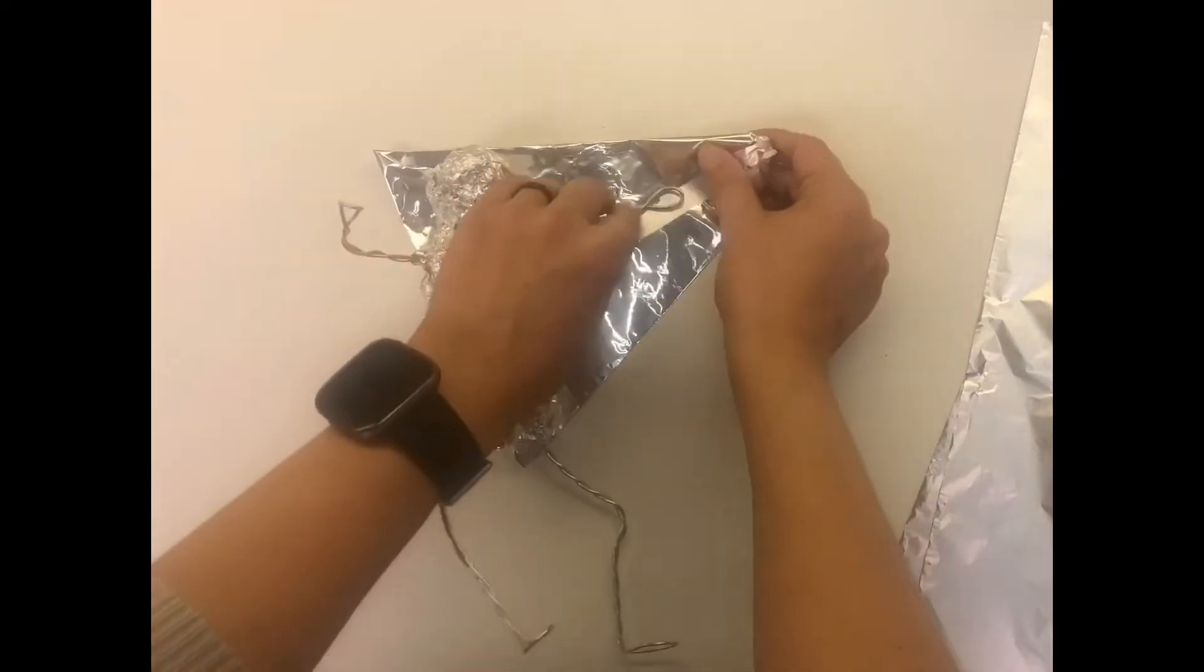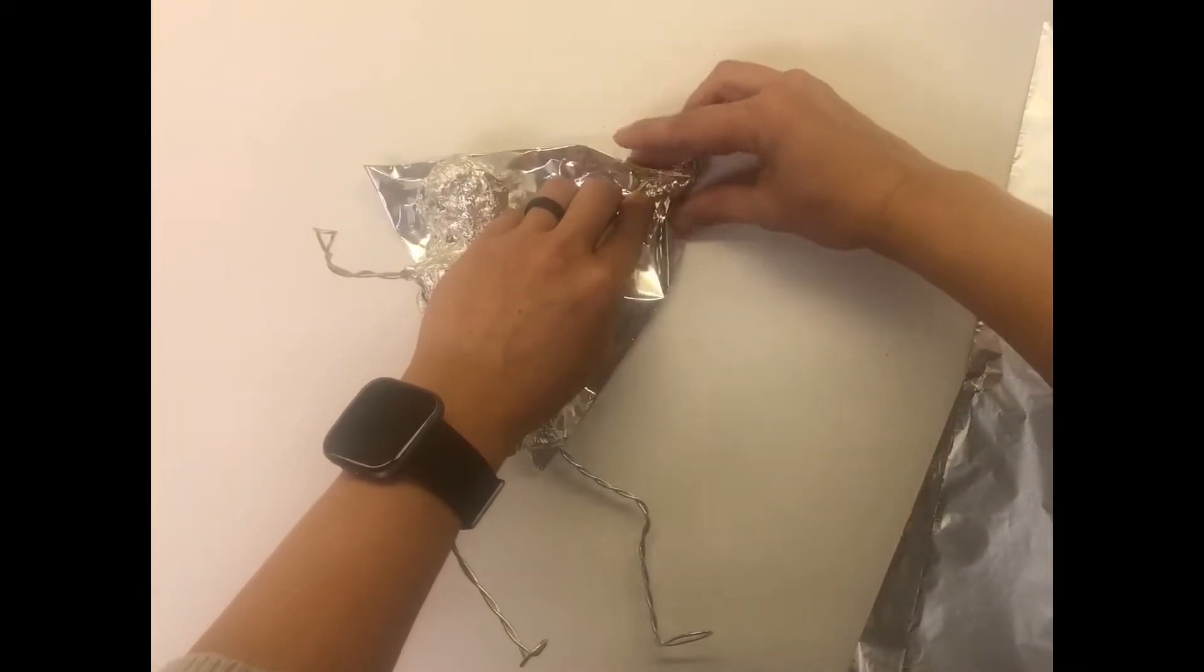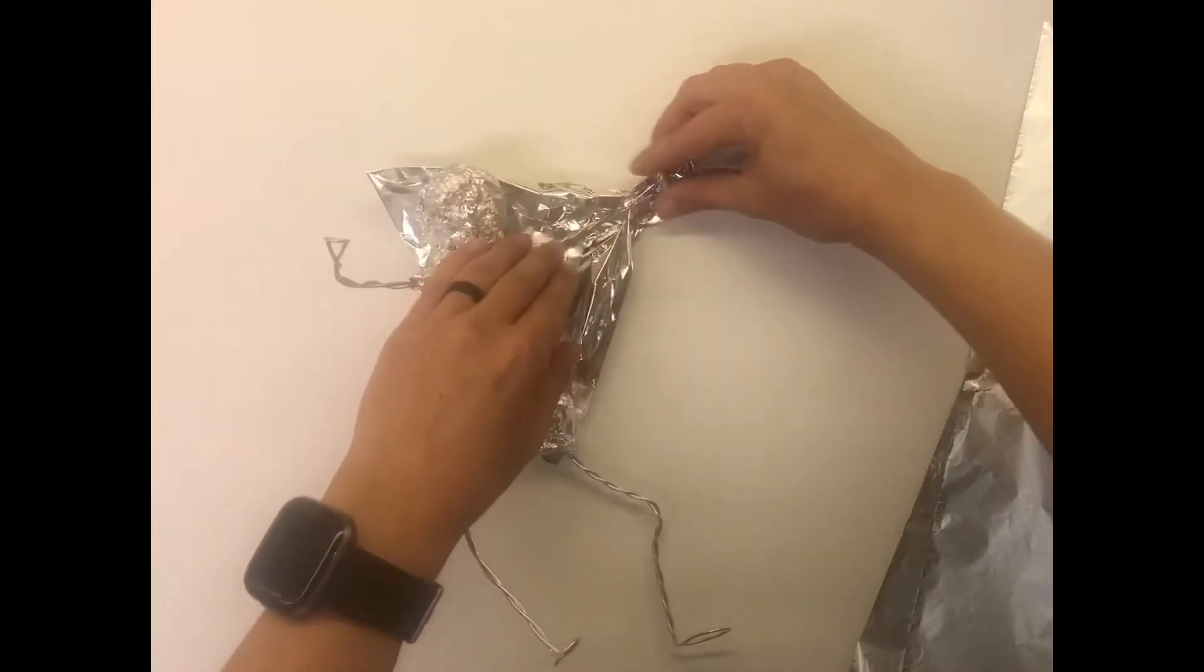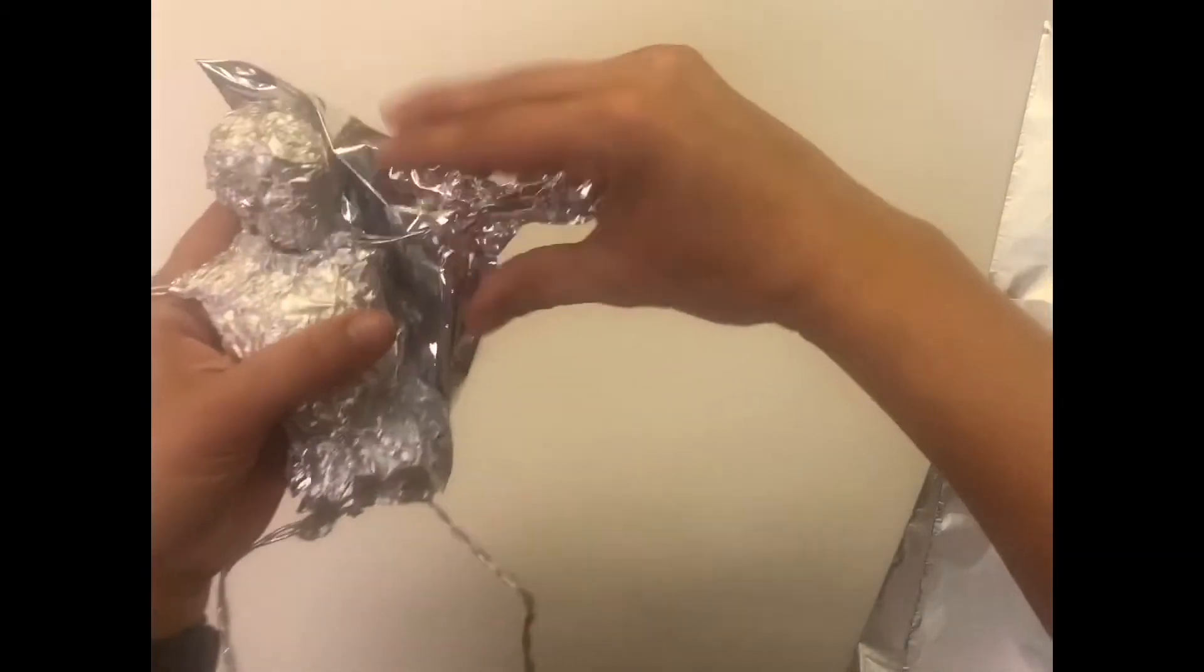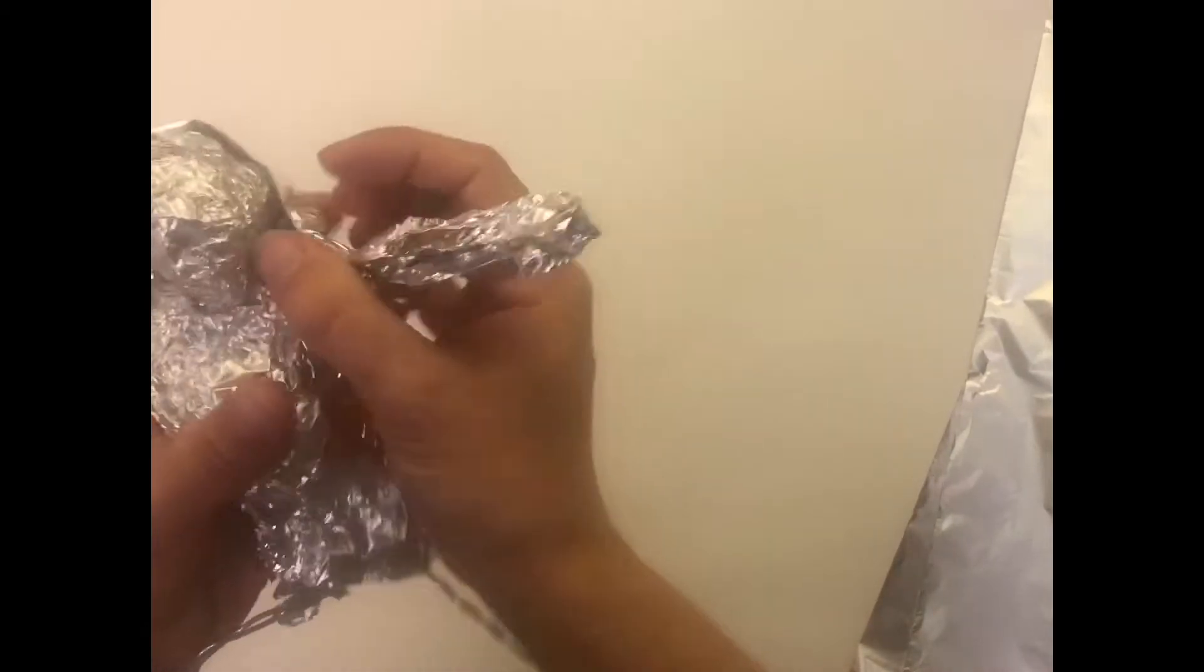Now I extend the foil a little past the hand. So I scrunch it into the loop. And then I can start gently scrunching the foil around the arm. It always looks kind of fluffy or chunky when I first start. And that's okay.